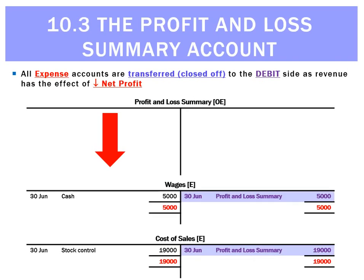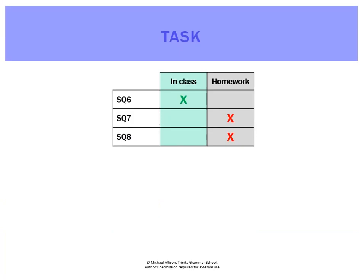Looking at the two expense accounts — wages and cost of sales — we needed to reset their balances to zero with credits. Where does that go? We're going to put that to the Profit and Loss Summary ledger on the debit side, decreasing profit or owner's equity. That makes sense — they'll go on the debit side, combined into one total of twenty-four thousand dollars.